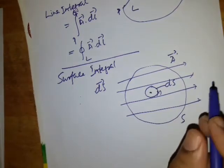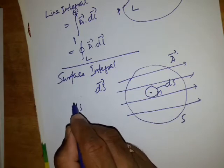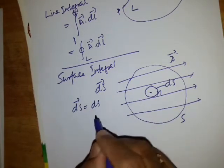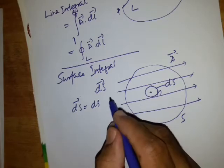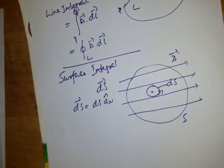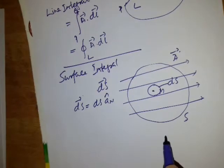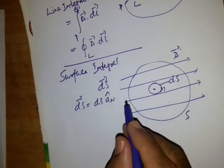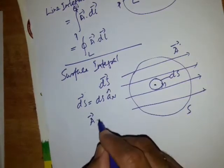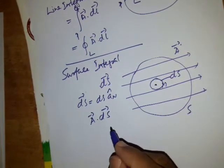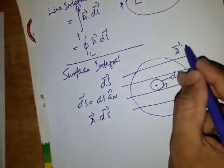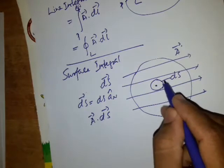And in the vector field, DS is written as vector DS equals DS into a unit vector which is normal to the surface. Now if I take the product of the vector field A and DS, this gives the flux of the vector field A through DS.